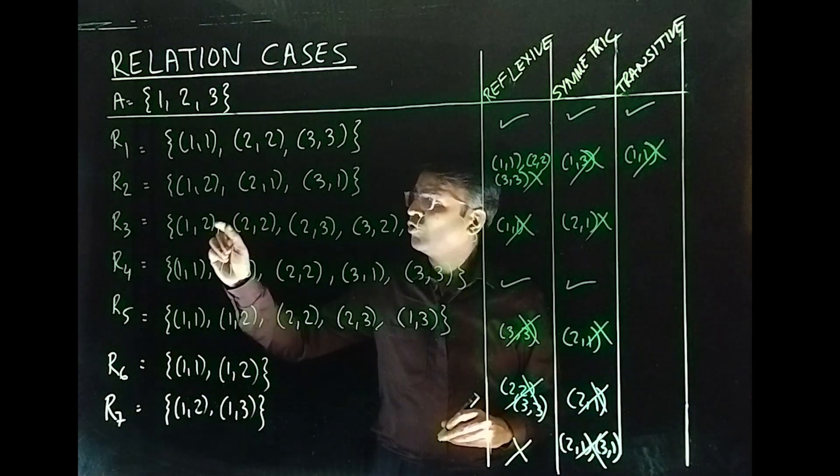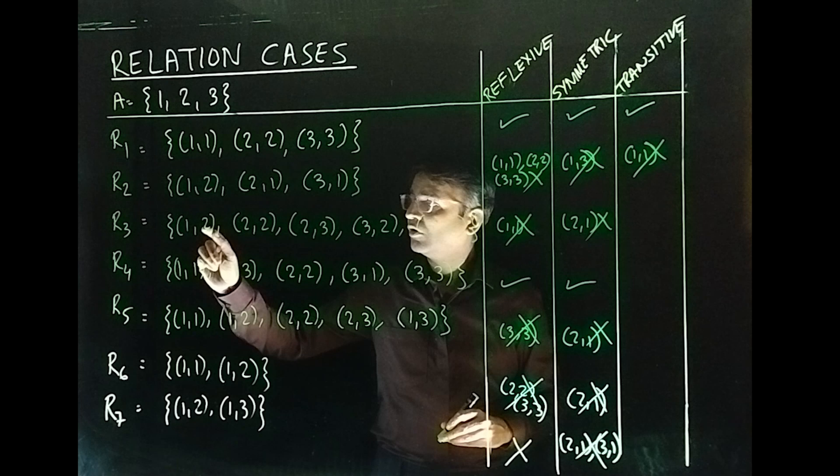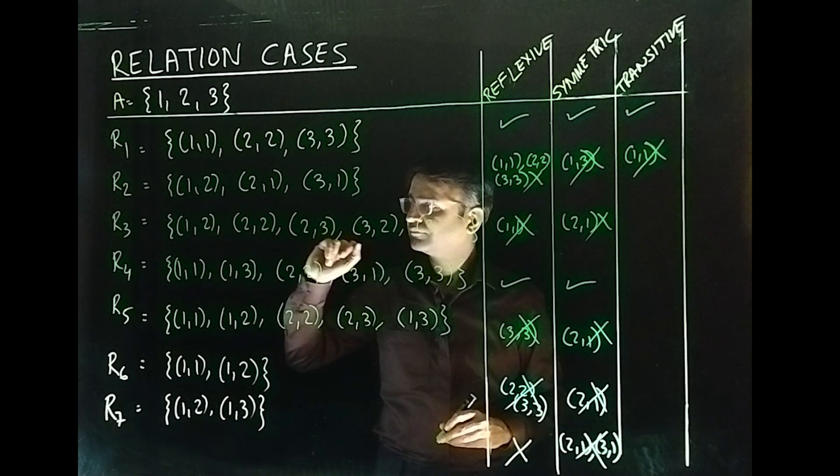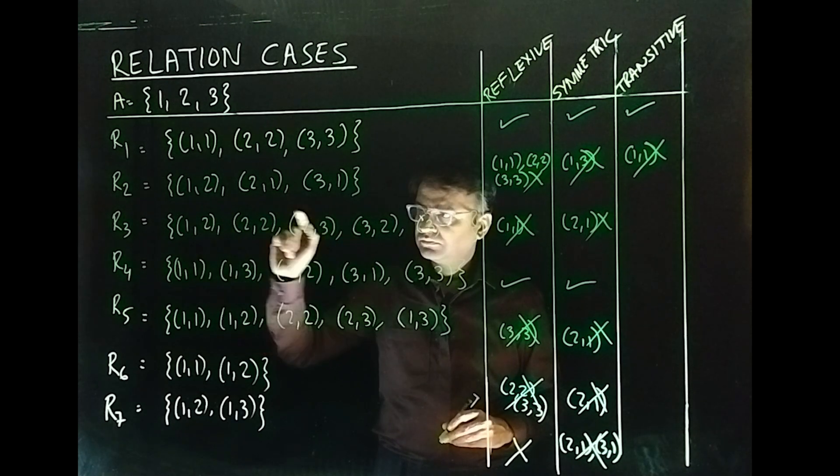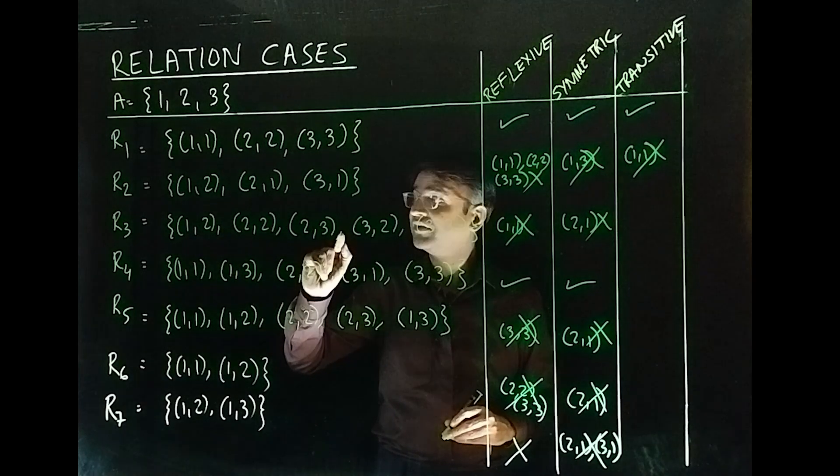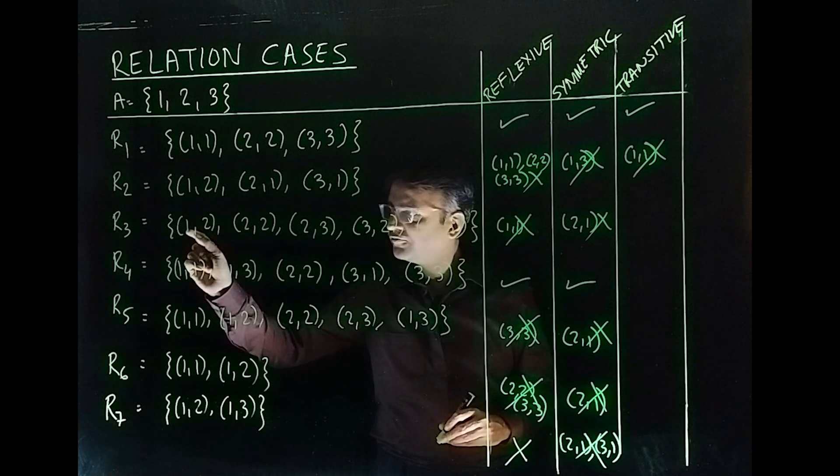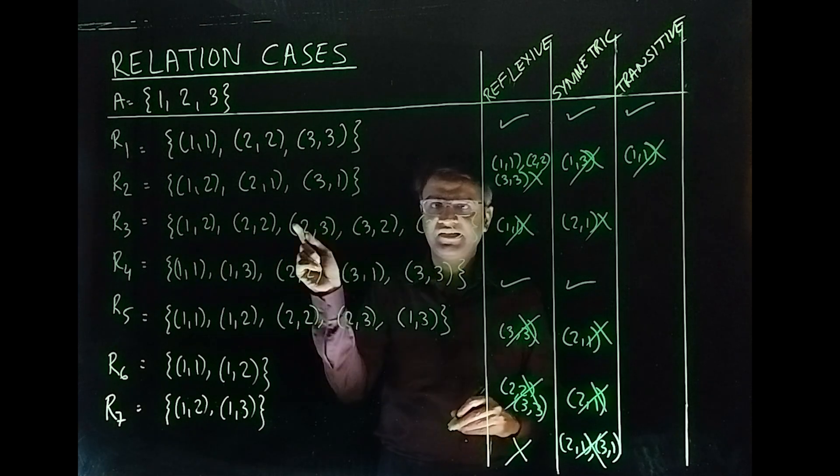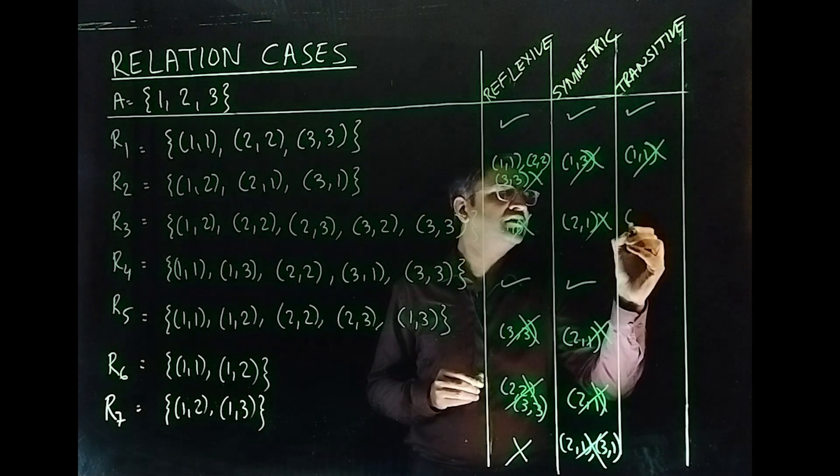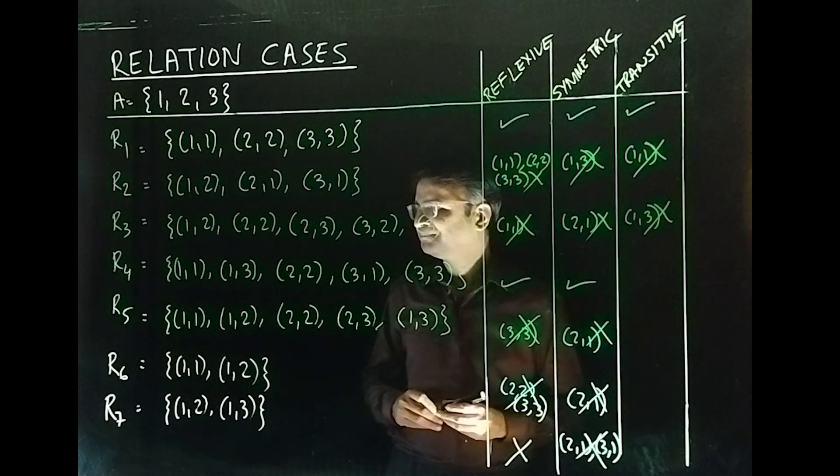Let's start on R₃. So, we have (1,2), (2,2), (1,2). Fine, done. We have (1,2), (2,3), (1,3). Yeah, (1,3) is missing. That means, look at this. First-second, second-third. First-third (1,3) is missing so since (1,3) is missing this is not transitive.